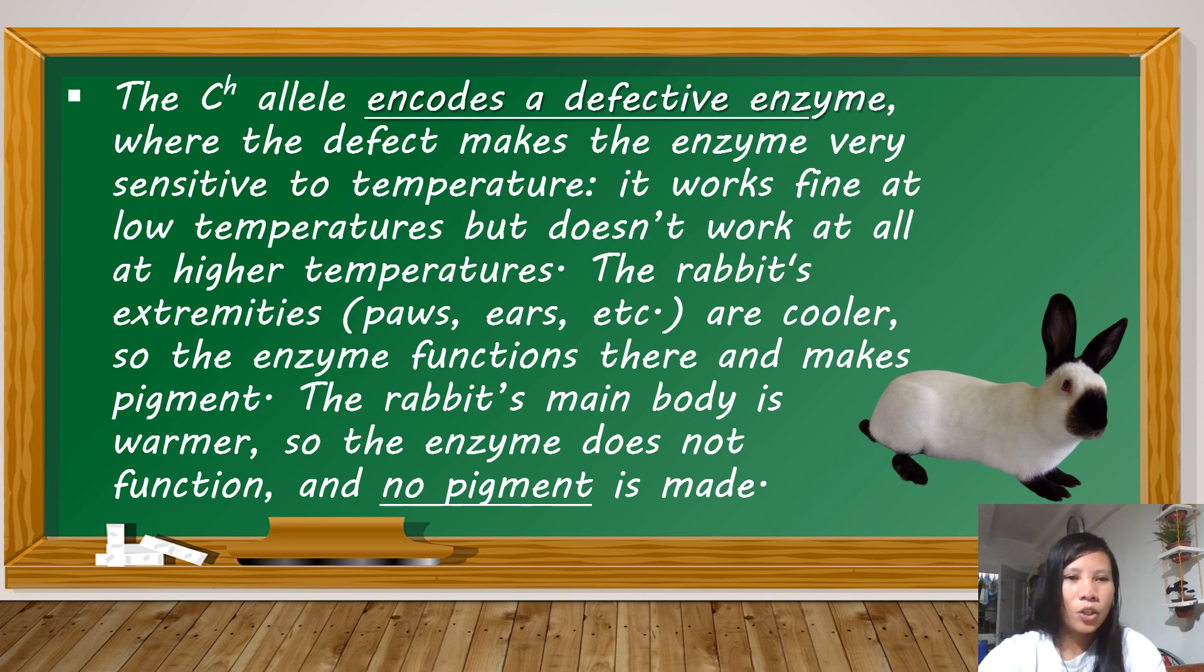The C raised to h, or Himalayan allele encodes a defective enzyme where the defect makes the enzyme very sensitive to temperature. It works fine at lower temperatures, but doesn't work at all at higher temperatures. The rabbit's extremities, like the paws, the ears, etc., are cooler. So the enzyme functions there and makes the pigment. The rabbit's main body is warmer, so the enzyme does not function and no pigment is made.